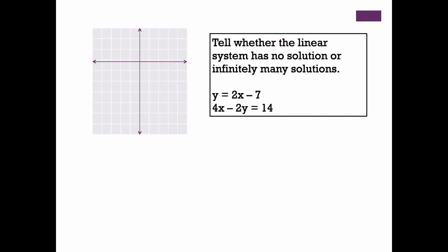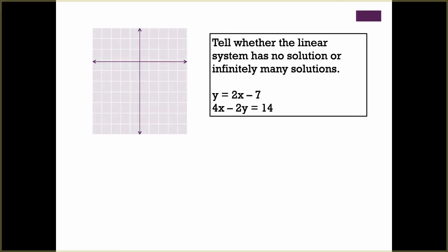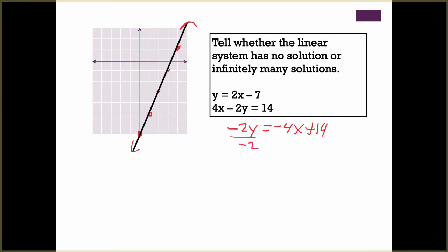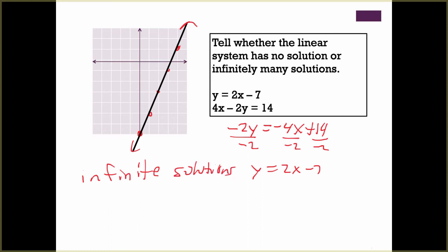Here it says to tell whether the linear system has no solution or infinitely many solutions. We're going to graph them and see what happens. The first equation has a y-intercept of negative 7 and a slope of positive 2, so we go up 2 over 1 and draw our line. Then we have 4x minus 2y equals 14. Rewriting in slope-intercept form: subtract 4x, get negative 2y equals negative 4x plus 14, divide by negative 2, and we get y equals 2x minus 7 — the same line. So we write 'infinite solutions, same line.' Even if you see it's the same line, you must graph it, because this section is on graphing.